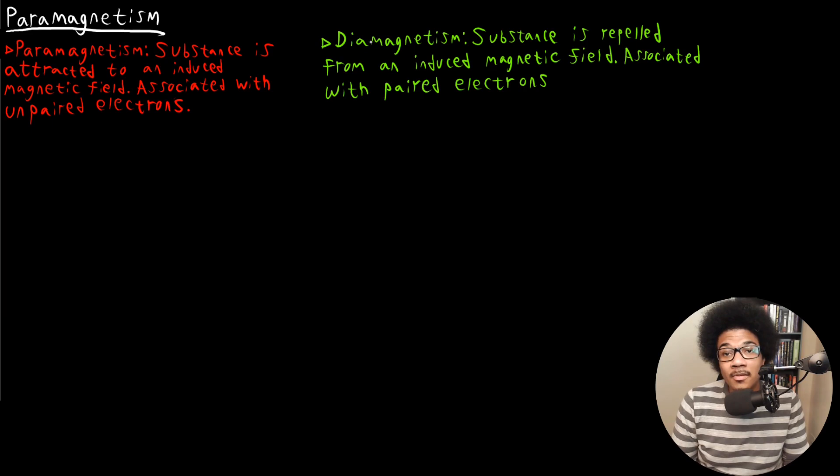And the opposite of paramagnetism is diamagnetism, which is when a substance is repelled from an induced magnetic field, and this is associated with paired electrons. So what happens here is, let's just say we have an unpaired electron that's in some orbital, that exists in some molecule's electron configuration.